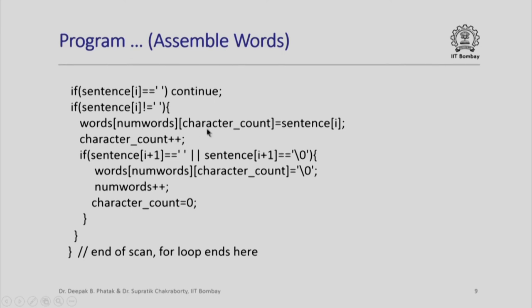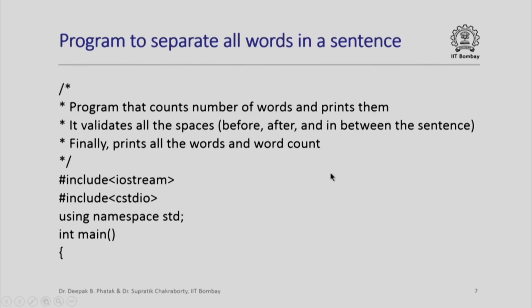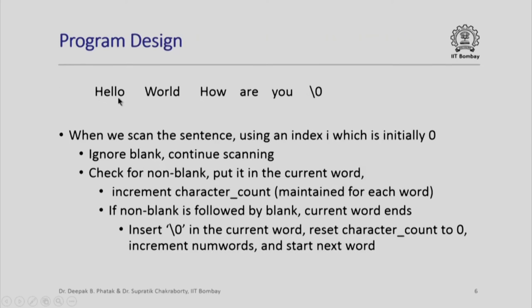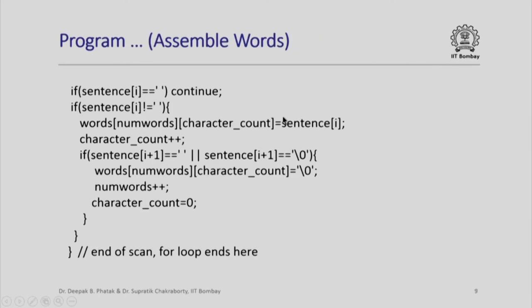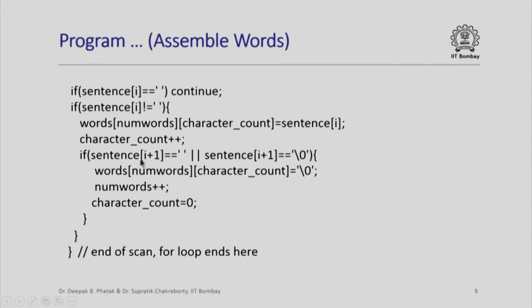Ordinarily, I would have gone back to assemble more characters. However, I check if the next character is a blank or if the next character is a backslash 0. This will indicate the end of this word. Let us go back to the previous slide and examine what we mean. Please note that if this was the non-blank character which I just inserting in the current scan, the next character is a blank. Similarly, the next character here is a blank. Whenever that happens, my current word has ended and that is why what I do now here is that if the i-plus-1-th element of sentence is a blank or a backslash 0, I terminate the present word which means in the current position which is character count position, I insert a backslash 0.